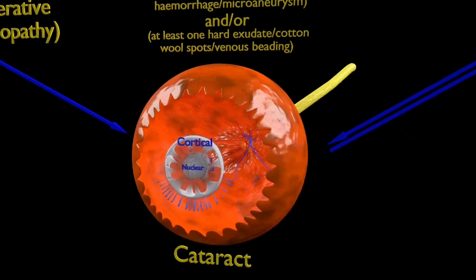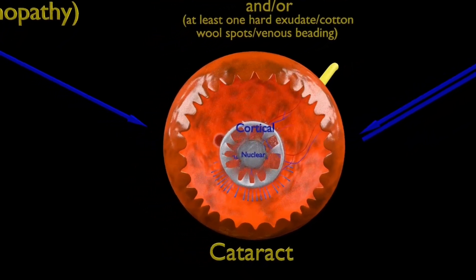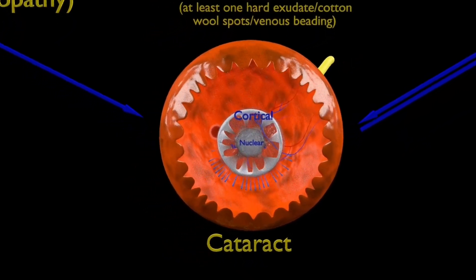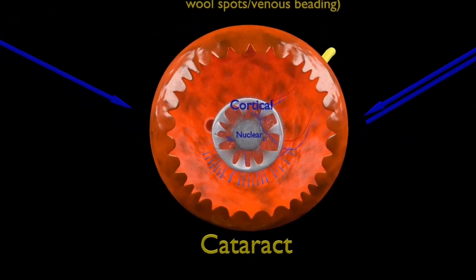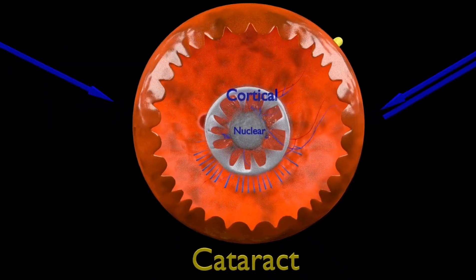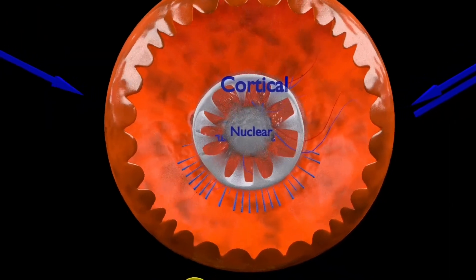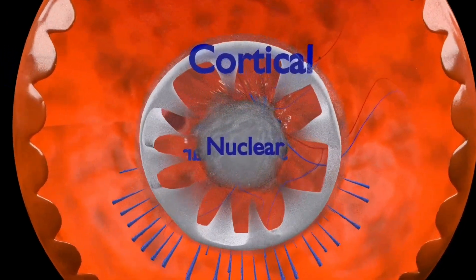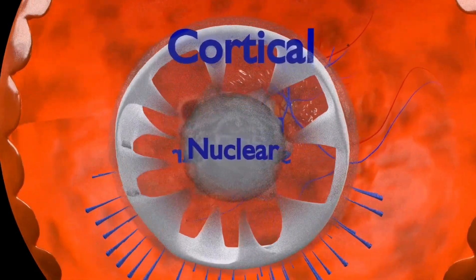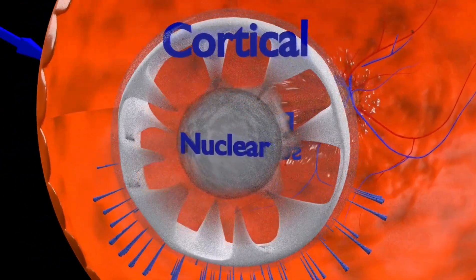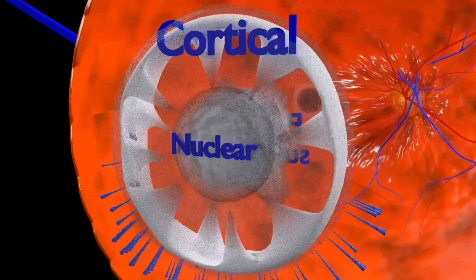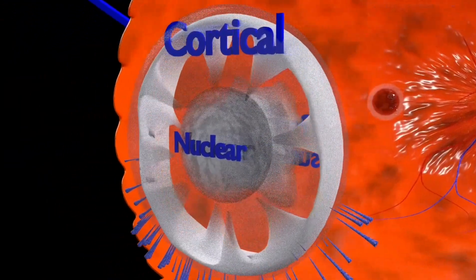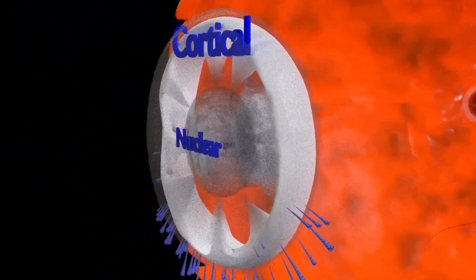We shall now focus on the different types of cataract commonly present in diabetes mellitus. As you can see, the three common types of cataracts are: the central nuclear, the peripheral cortical, and the posterior subcapsular cataract.